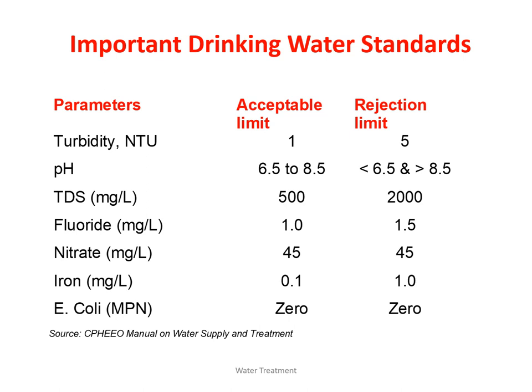Turbidity: the desirable limit is 1 NTU and the permissible limit is 5 NTU. pH should be 6.5 to 8.5 — if the pH value is less than 6.5 or greater than 8.5 it must be corrected; there is no deviation allowed in the permissible limit. Regarding TDS concentration, the acceptable or desirable limit is 500 mg per litre, and we can go up to 2000 mg per litre if no other water source is available.